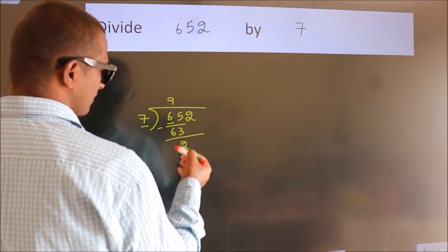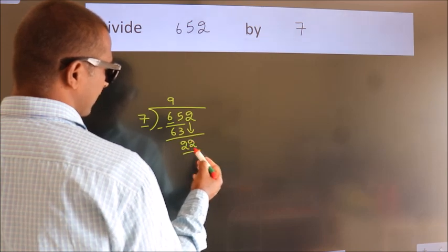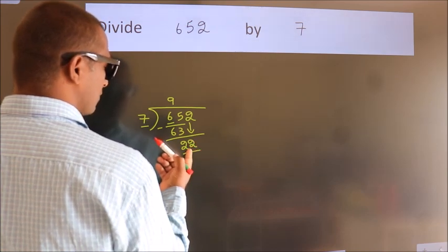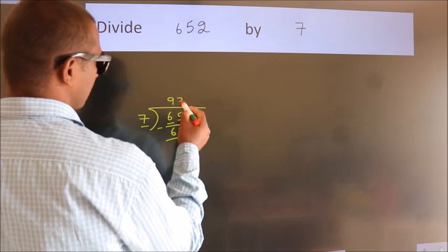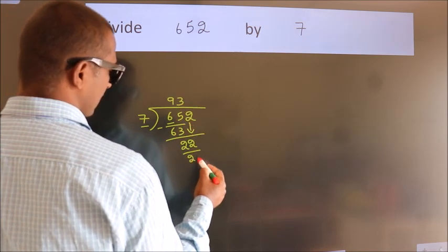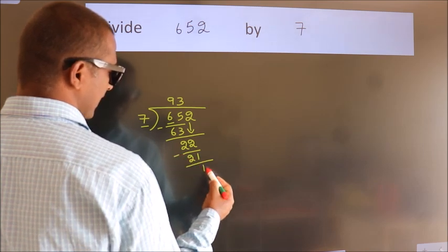After this, bring down the next number. So 2 down. So, 22. A number close to 22 in the 7 table is 7 threes, 21. Now we subtract. We get 1.